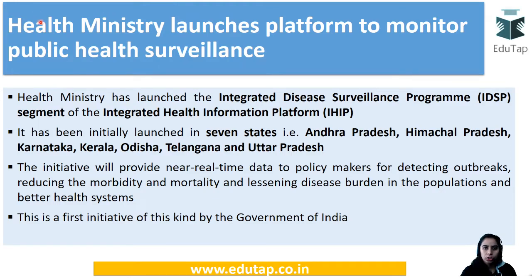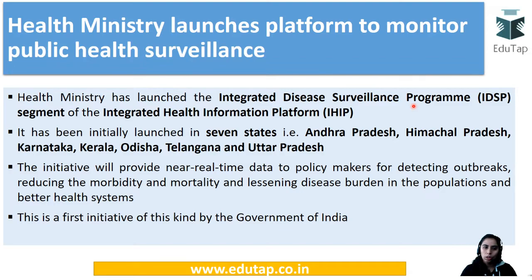The first news is about the launching of a platform to monitor public health surveillance. The Health Ministry has launched the Integrated Digital Surveillance Program (IDSP), which is a segment of the IHIP — Integrated Health Information Platform. IHIP consolidates all health-related data on a single platform. IDSP has been launched in seven states: Andhra Pradesh, Telangana, Himachal Pradesh, Karnataka, Kerala, Odisha, and Uttar Pradesh. It provides real-time data to policymakers to detect outbreaks and reduce mortality and morbidity.